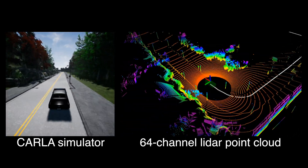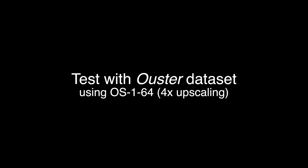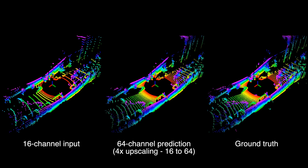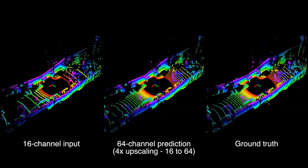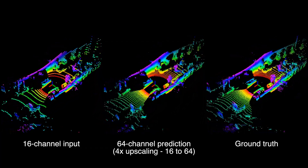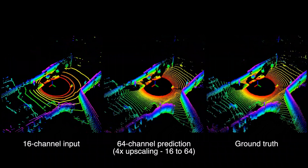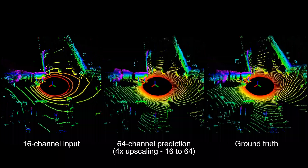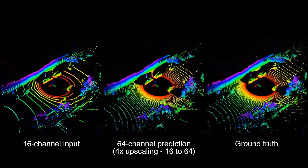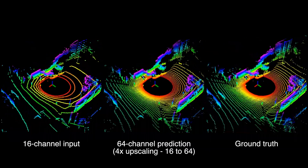For the purpose of data generation, no traffic rules are followed here. We test our approach on several real-world datasets. We first test it on the Ouster Dataset, which is captured using a 64-channel LiDAR while driving in San Francisco. We evenly extract 16-channel data from the 64-channel data and perform prediction with 4-time upscaling. This naturally gives us ground truth for demonstrating the accuracy and quality of our prediction.